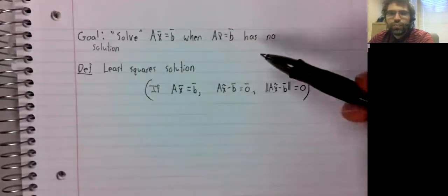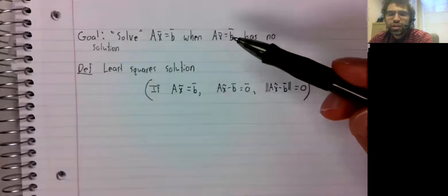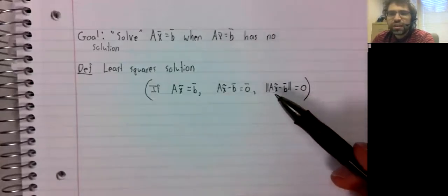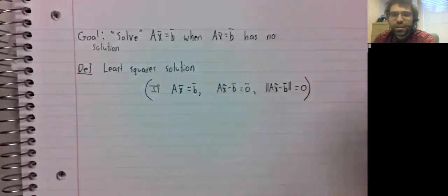Well, we're interested in what happens when there aren't solutions. So we can't expect the distance between A x tilde and b to be zero.